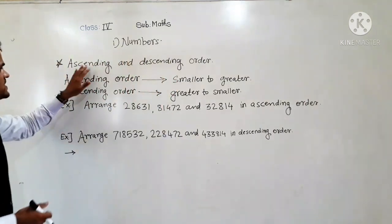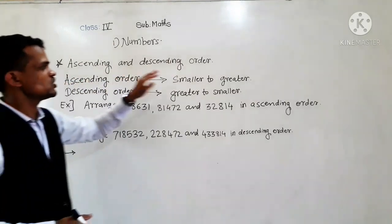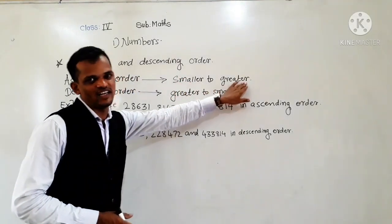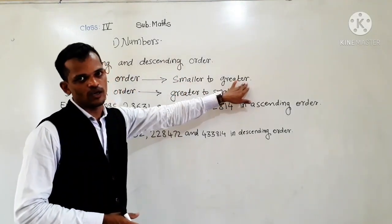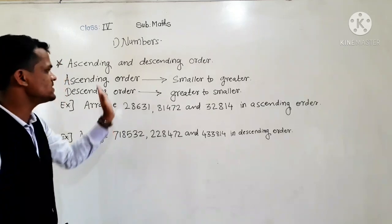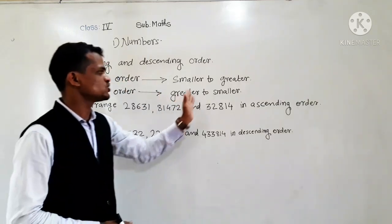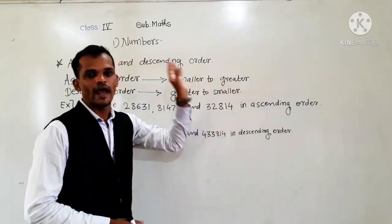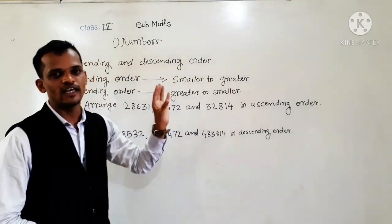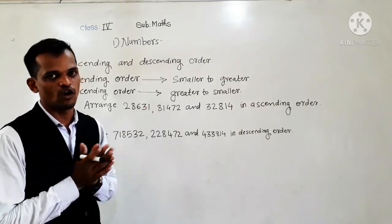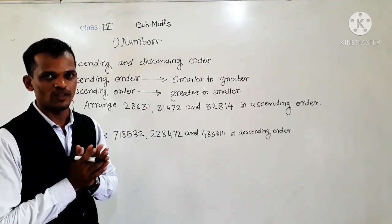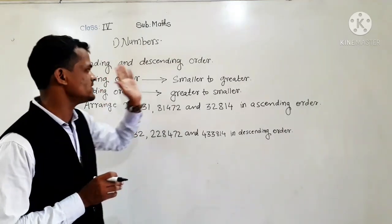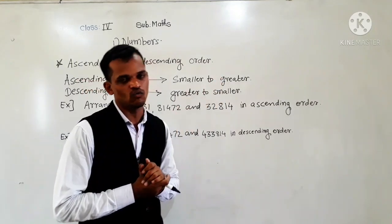So, ascending order means smaller to greater order and descending order means greatest to smallest. Ascending order means increasing order and descending order means decreasing order.